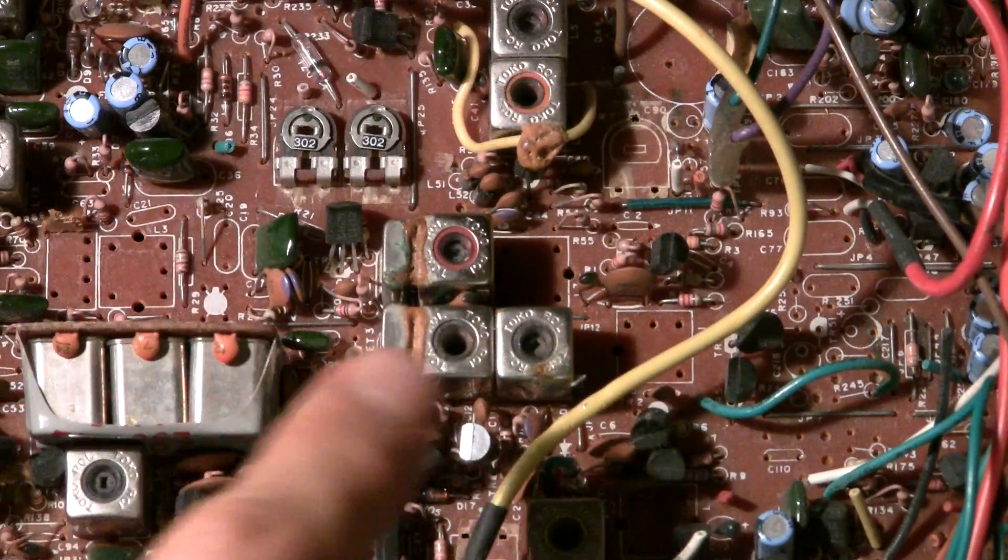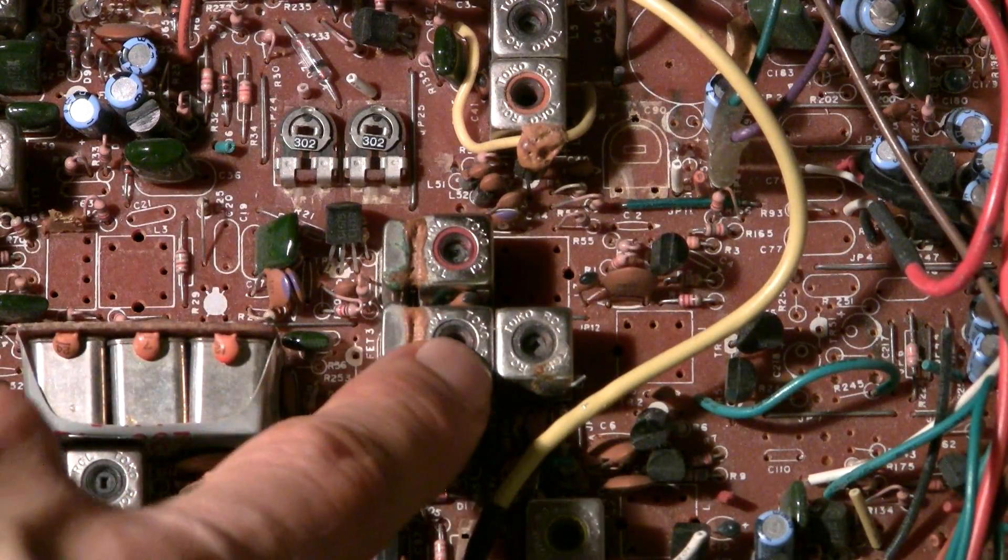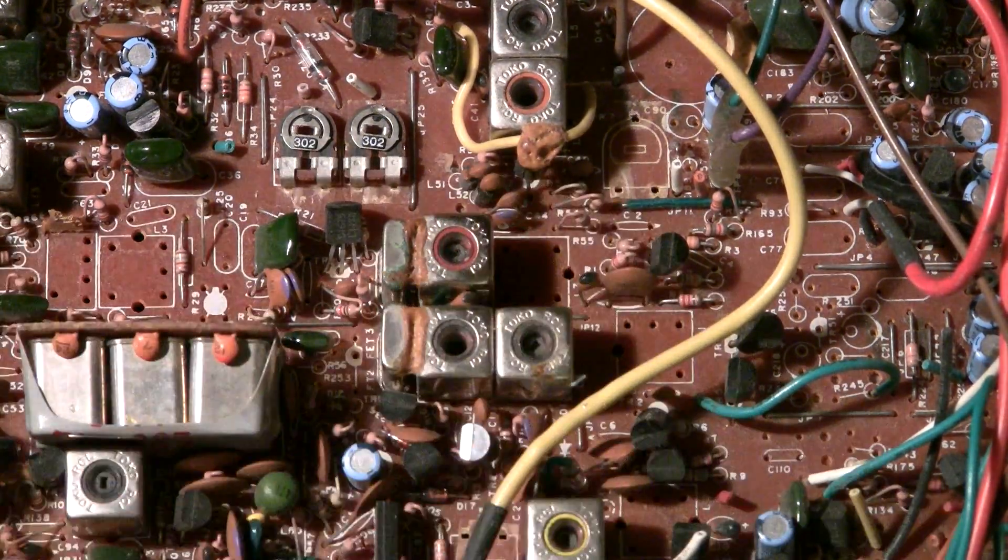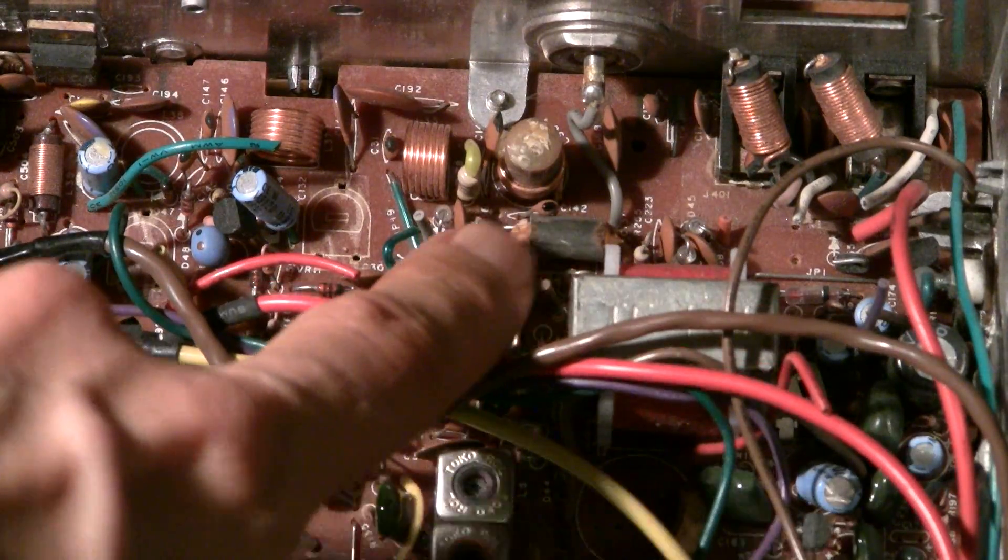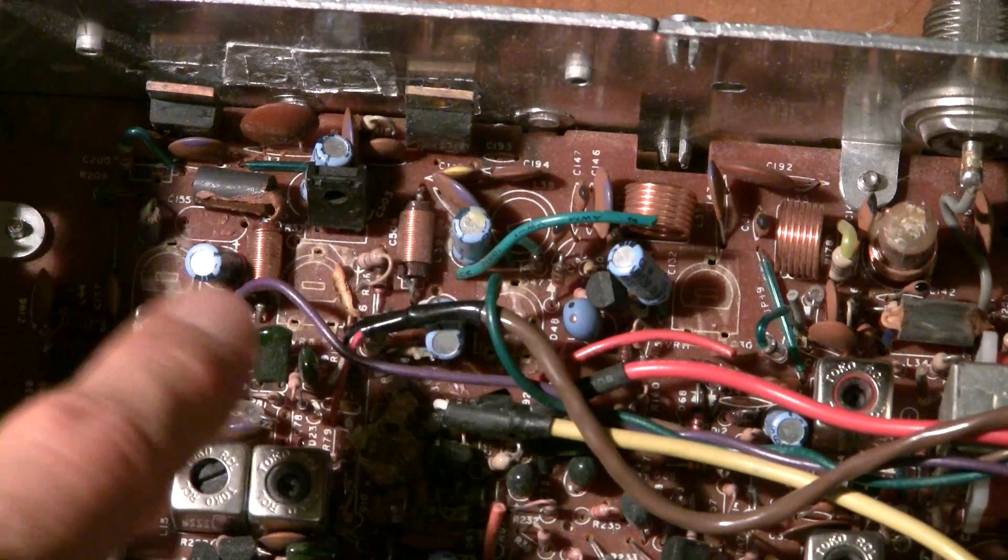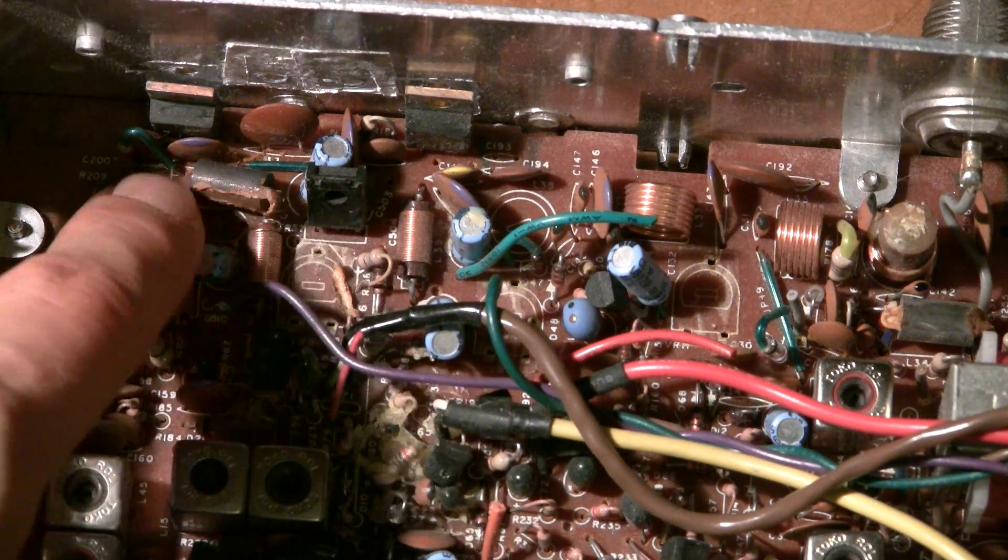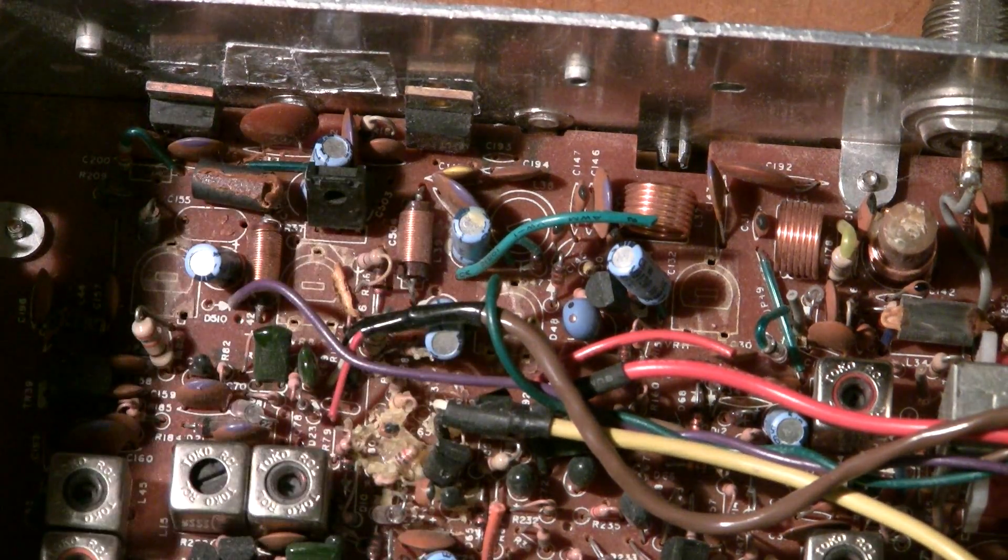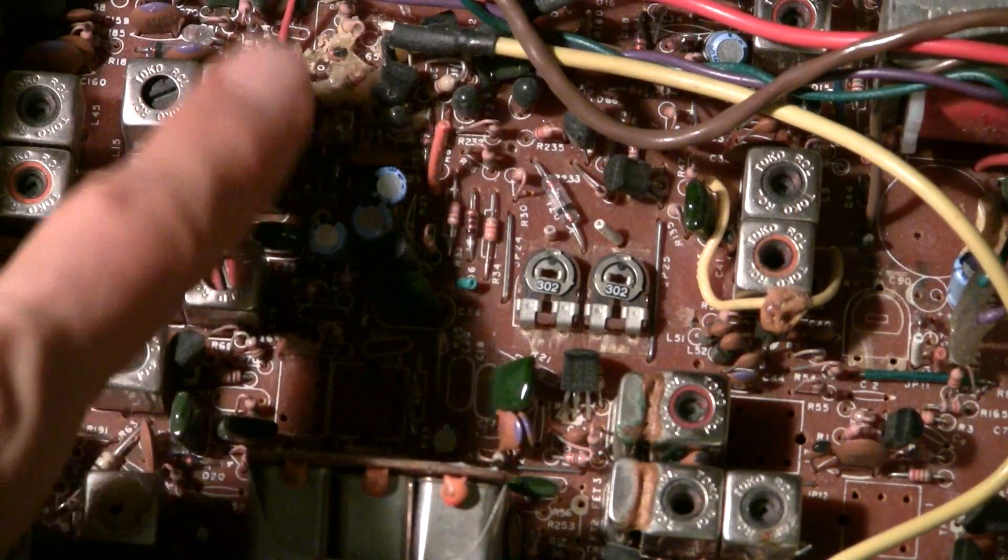You see this glue, this glue here holding the crystal to the can, this glue here holding the wire, there's glue on this form back here, this is wax not glue up here. You can see back here there's glue, I've chipped it away a little bit on this ferrite bead, it's all over this radio, it's everywhere.